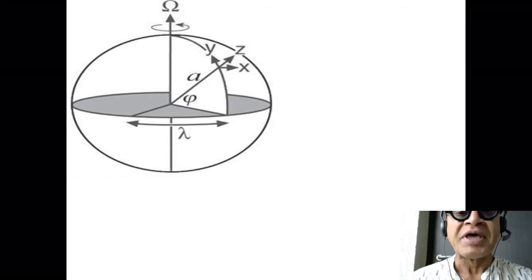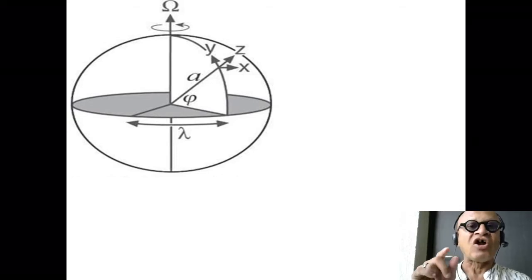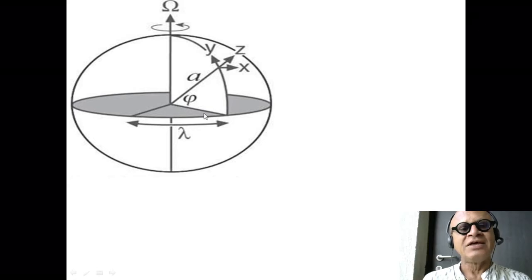So let's look at a section through the sphere. Here is the equatorial plane, here is the longitudinal direction along the circles on the sphere, and this is the latitudinal direction going away from the equator towards the poles. There is the radius of the earth a.